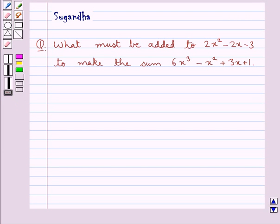Hello and welcome to the session. In this session we discuss the following question which says what must be added to 2x² - 2x - 3 to make the sum 6x³ - x² + 3x + 1.